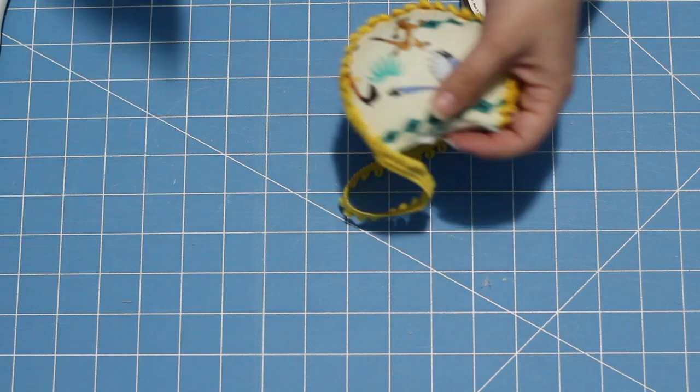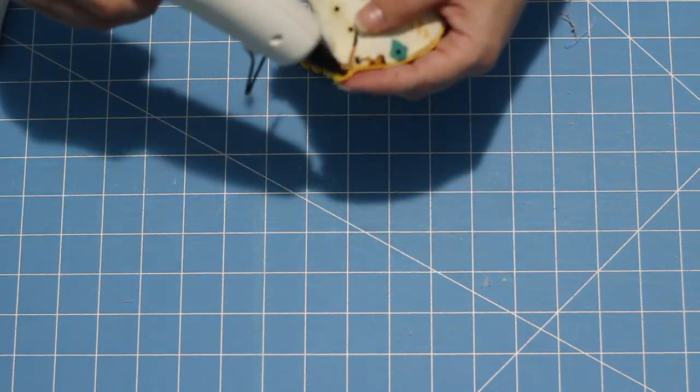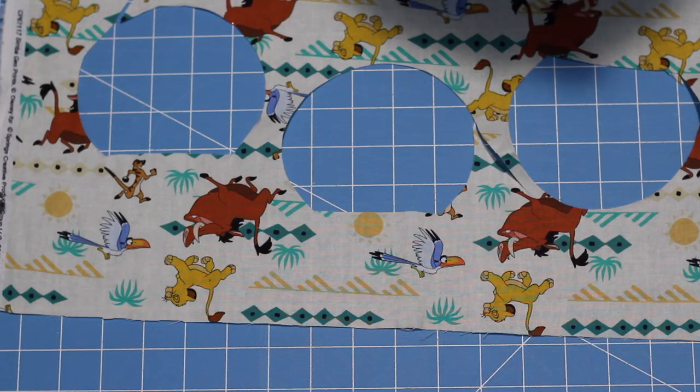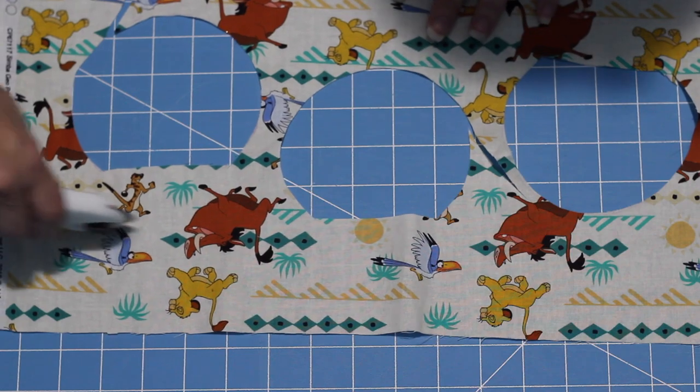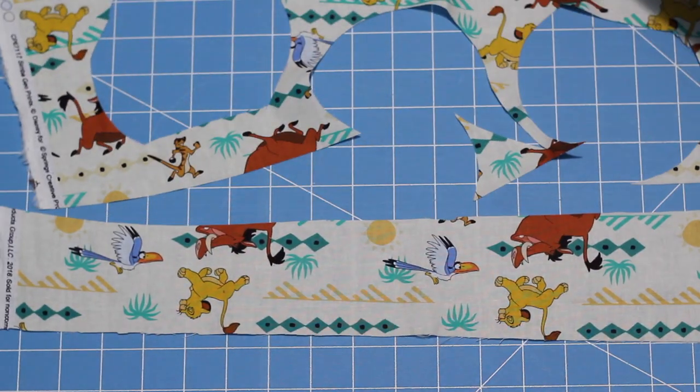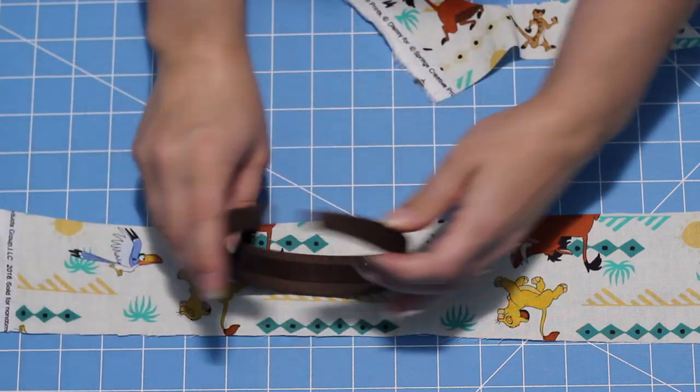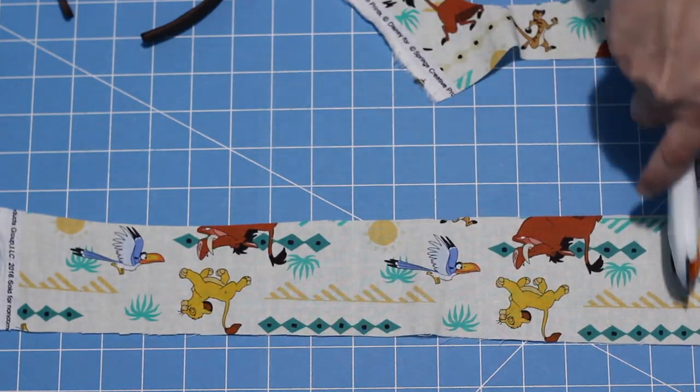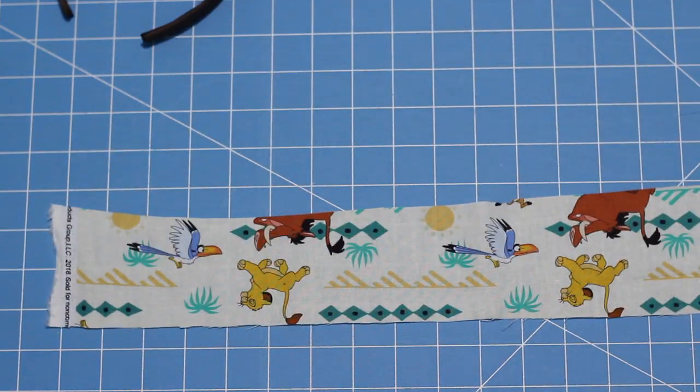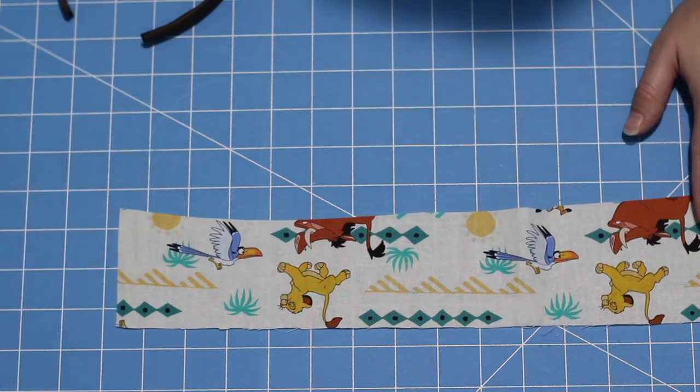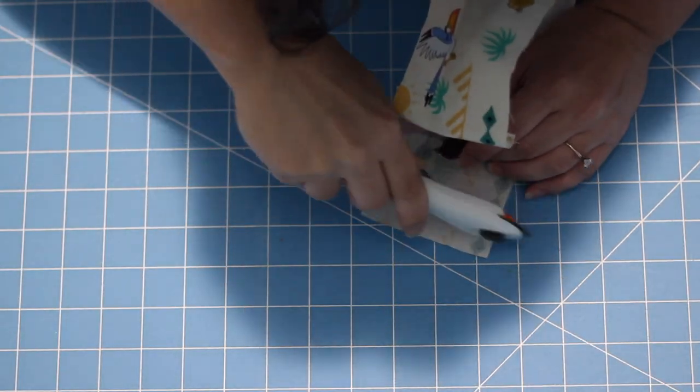Okay, now to cover the headband. So you're going to want to cut a strip. Mine is about three inches wide, but that's for my particular headband. Then you're going to take your headband and kind of roll it across the fabric to make sure that it's long enough. I always make mine a little bit extra long. Mine ended up being about 16 inches.